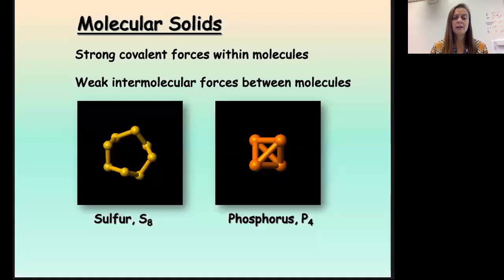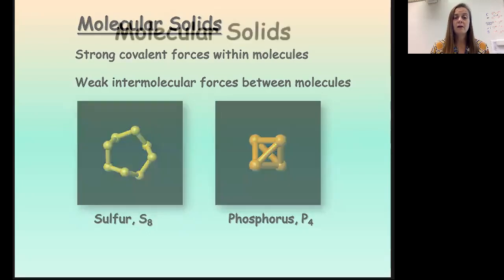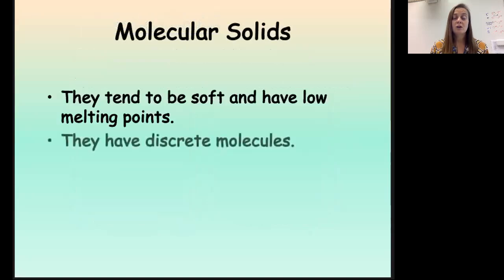Okay, so let's first talk about molecular solids. Molecular solids are those solids made up of covalently bonded molecules. Within a molecule, you have strong covalent forces we call bonds, and they hold the atoms of the molecule together. When we talk about intermolecular forces, we are talking about those weak forces between two different molecules. Because those forces are weak, molecular solids tend to be soft and have low melting points. They're made up of discrete molecules held together only by those intermolecular forces.